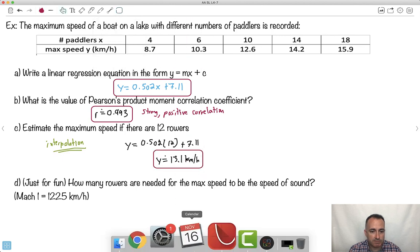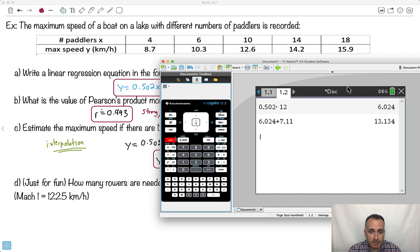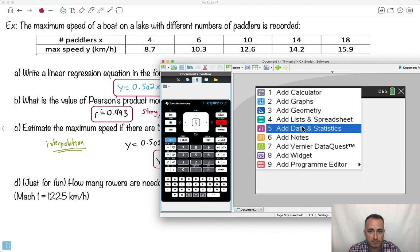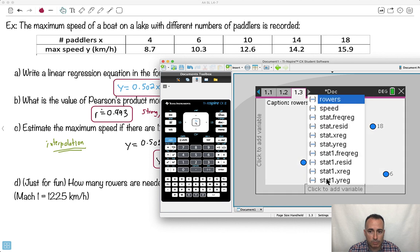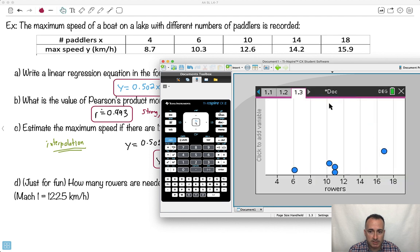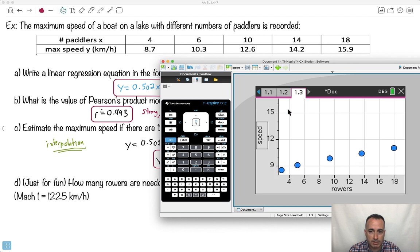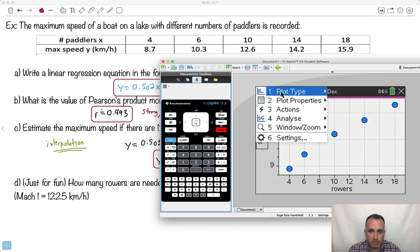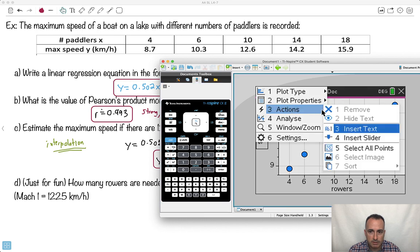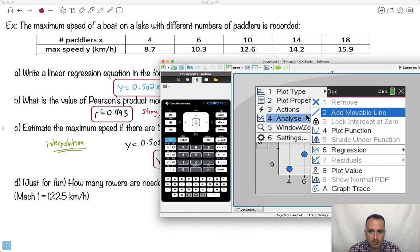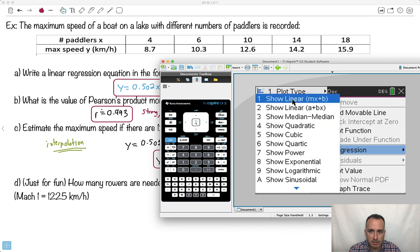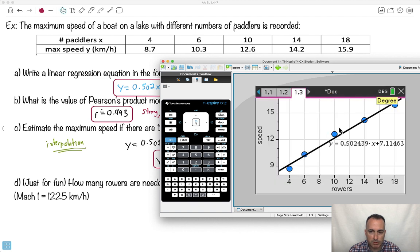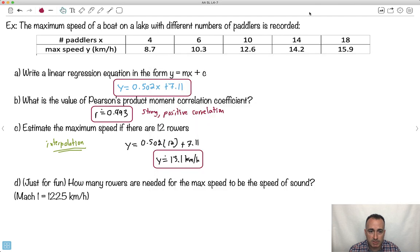By the way, remember I said you can visualize the data? Watch this. I can say give me a new page. I can say give me a data and statistics here. You just got to tell it what's what. So I'm going to say, oh, this is on the x-axis of rowers. On the y-axis is the speed. You can say, hey, look at that. And I can even say, hey, can you give me the regressions? I'm going to do analyze. Analyze, give me a regression. Give me a linear regression. So it sort of plots it for me. And can you notice that at 12, it looks like it's around, yeah, 13 point something. So it seems about right. This seems about right.